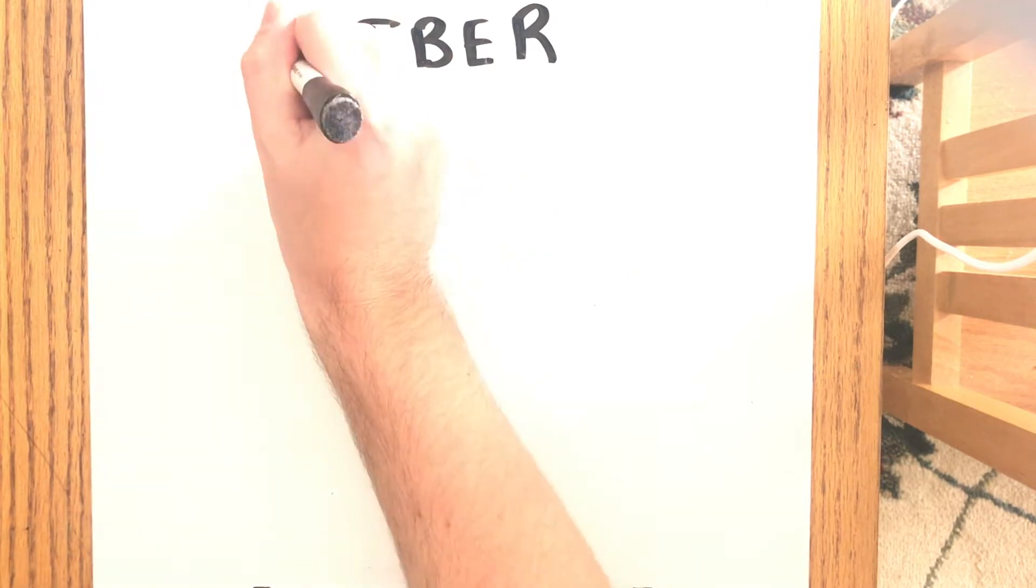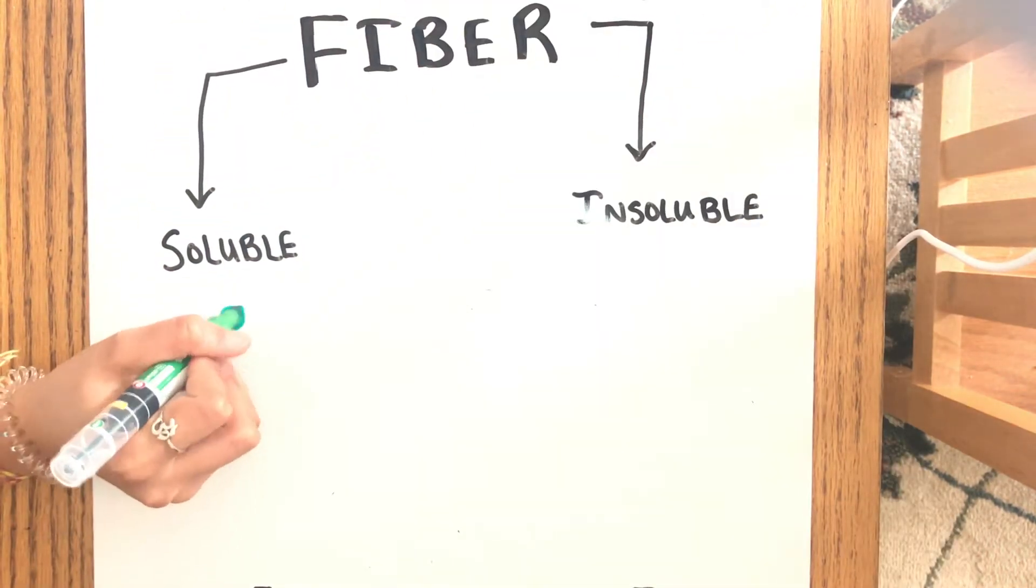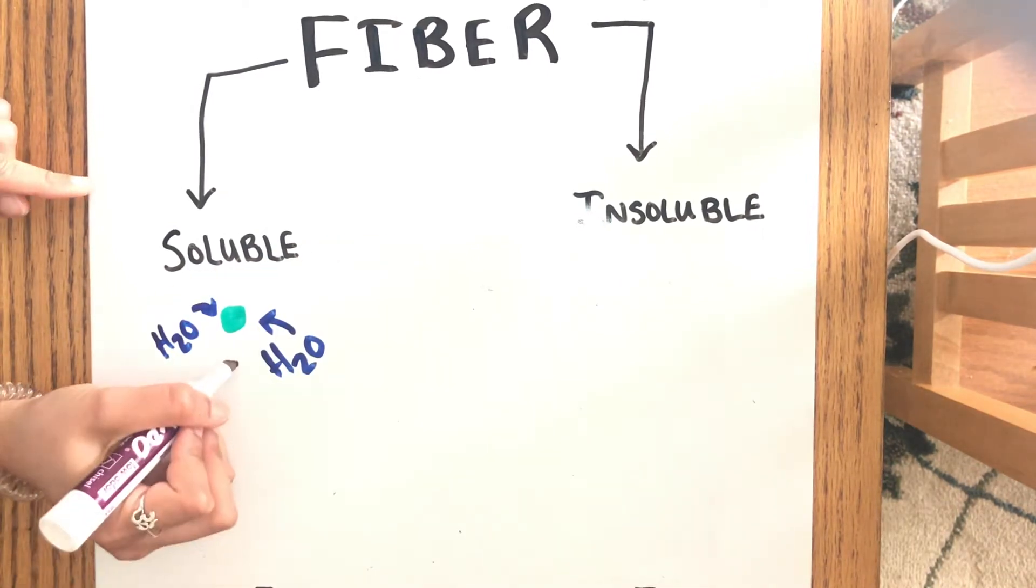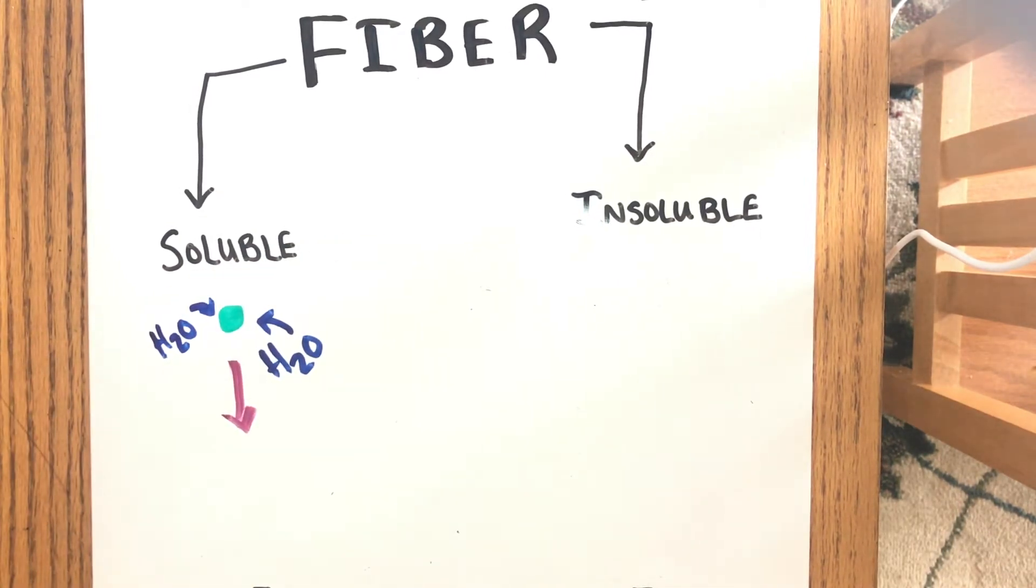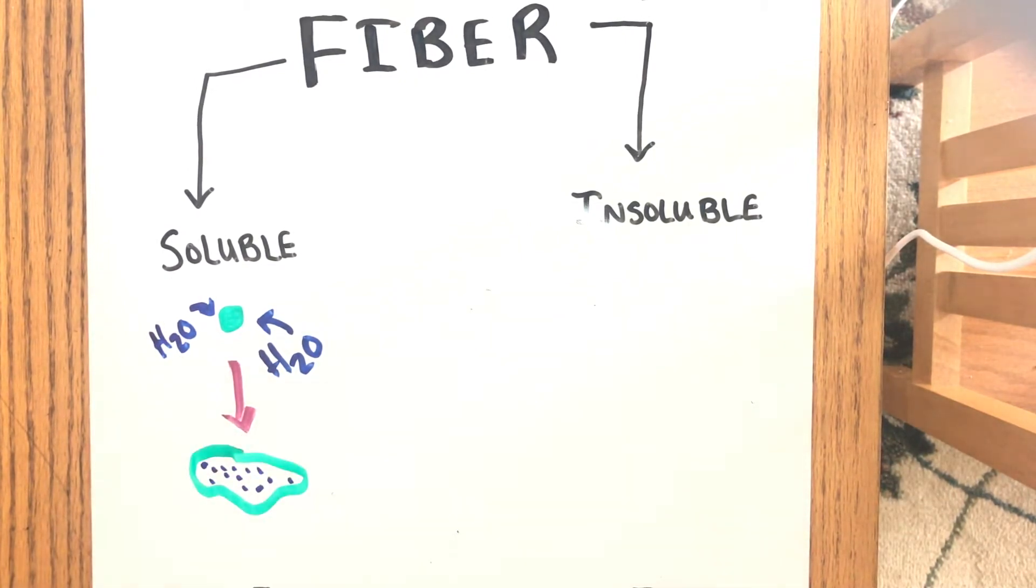There are two types of fiber, soluble fiber and insoluble fiber. Soluble fiber absorbs water and forms a gel-like substance which slows down digestion, making you feel full longer. This also slows down the rate of sugar absorption which can reduce the risk of gestational diabetes.